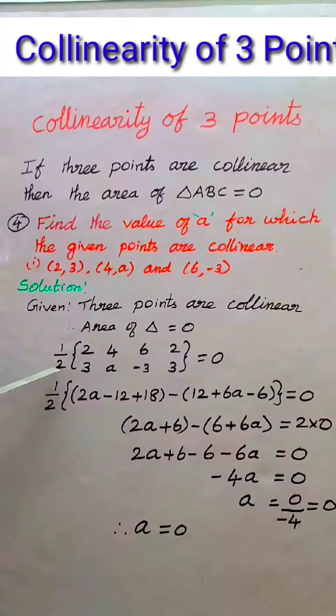Area of a triangle is equal to half times the determinant. First point (2,3), second point (4,A), third point (6,-3). Again we have to write the first point (2,3), equals 0 because the given points are collinear.